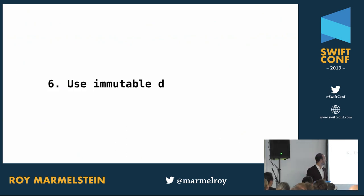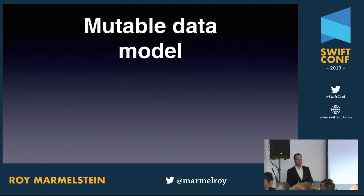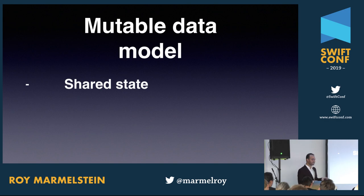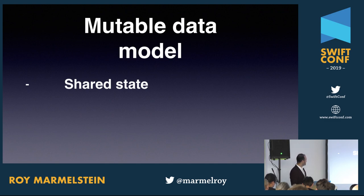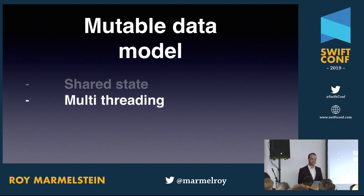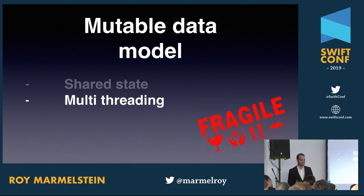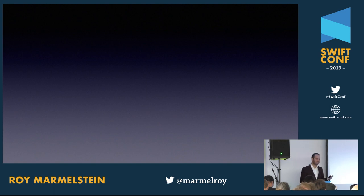Next rule: use immutable data models. The issue with mutable data models is shared state — a mutable data model might get changed in one place and not where you read it. That also has implications for thread safety, making mutable data models fragile because you might not react to the changes in the right way.